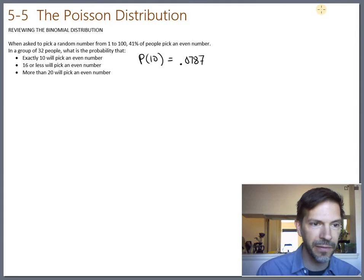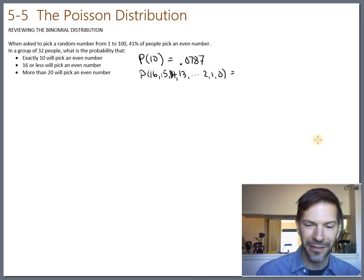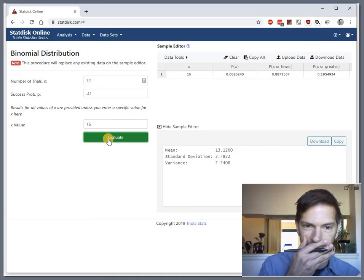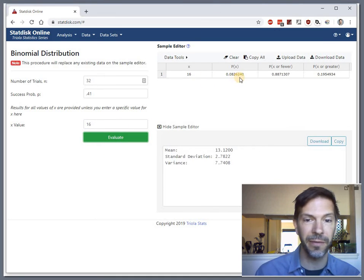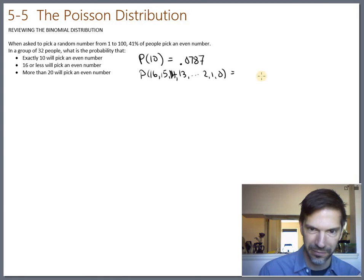For the second question, the probability of 16 or less. So that's the probability of 16 or 15 or 14 or 13, all the way down to 2, 1, 0. Let's go back to StatDisk and put 16 in for the X value, because one of the things this does is 16 or fewer. Let's evaluate. If X is 16, the probability of getting 16 or fewer, 16 or less, is 0.887 to three sig figs.